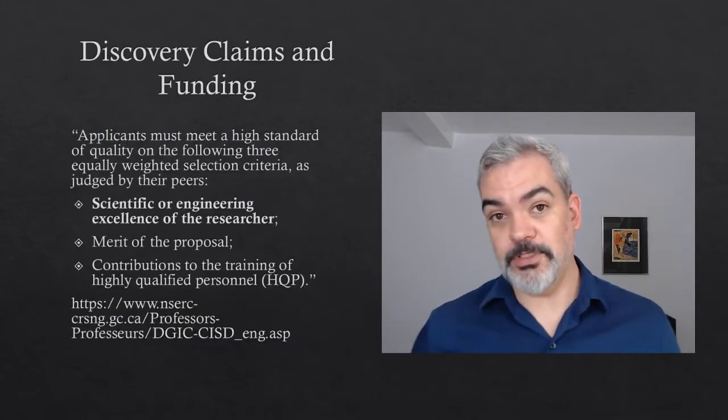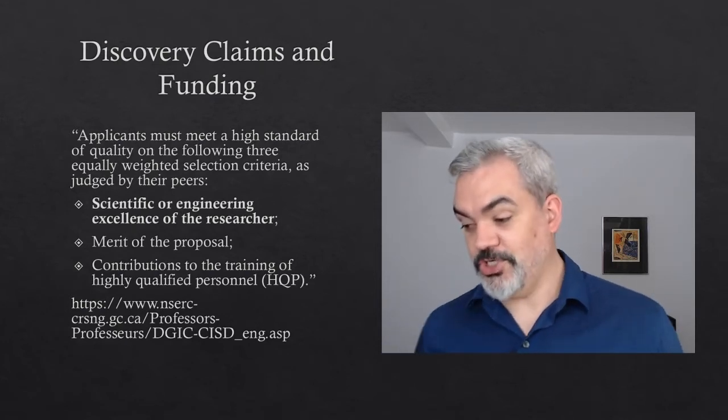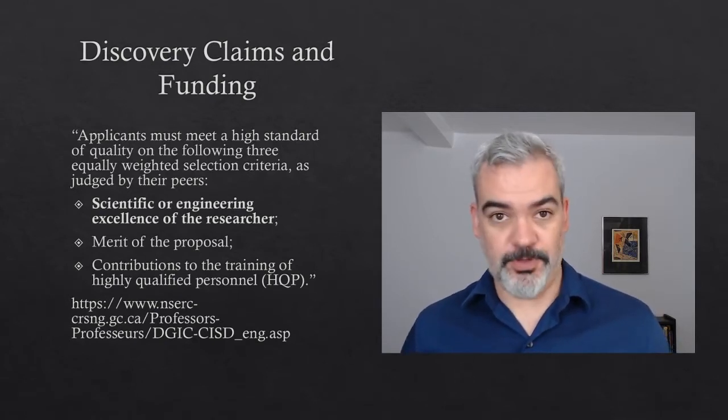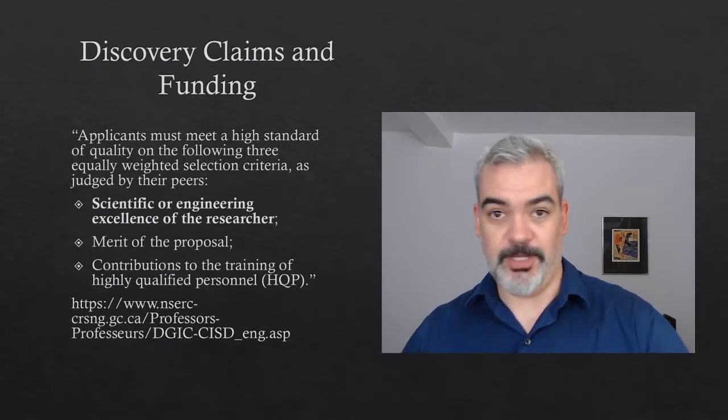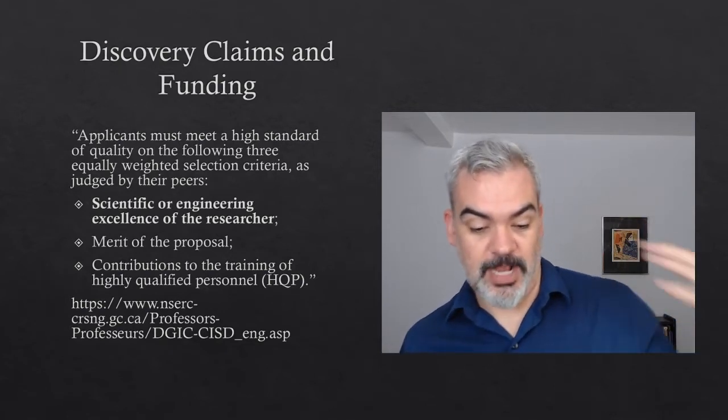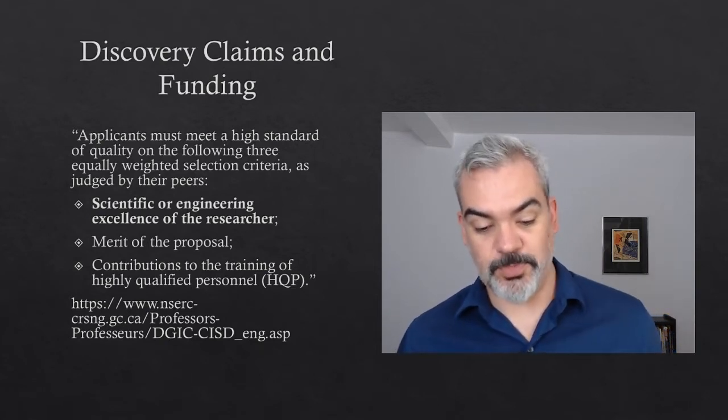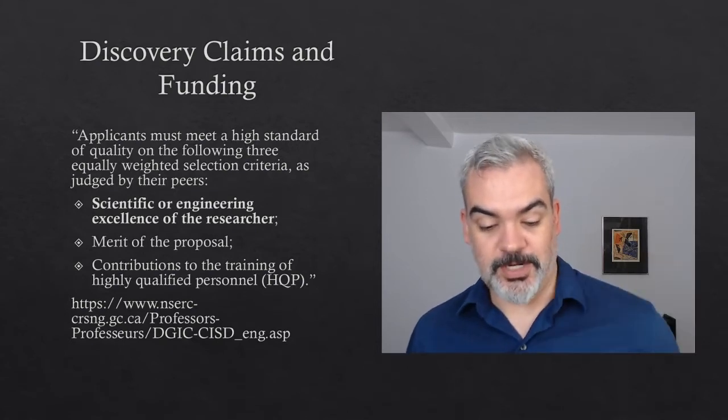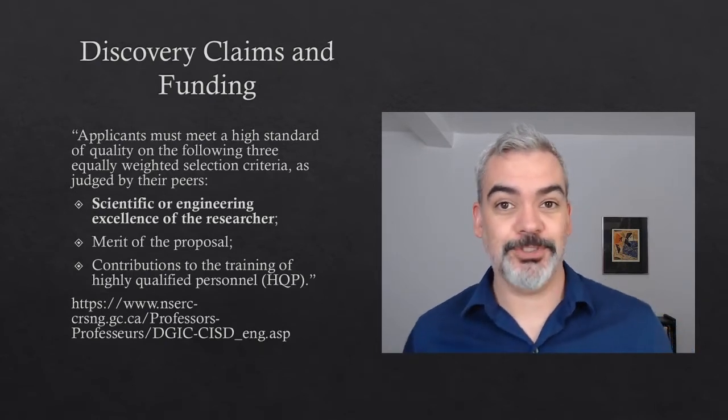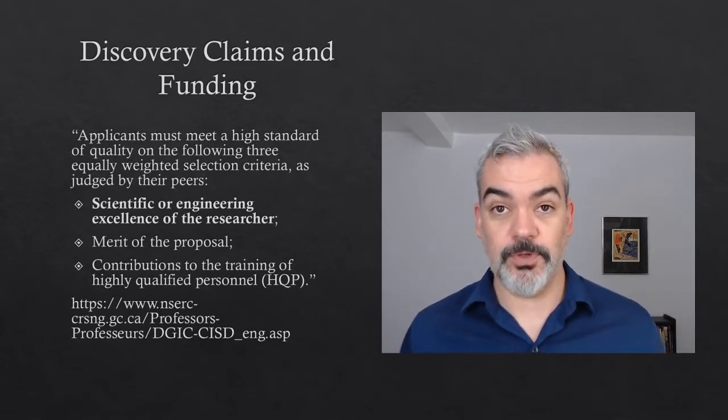And that credit is how you get further funding to keep doing science. So you kind of need a steady stream of credit for discovery claims if you're going to continue to be a scientist, if you're going to have a career in science. Just for example, if you look at the funding criteria that NSERC puts out, so NSERC is the Natural Sciences and Engineering Research Council of Canada. This is one of the biggest funding agencies that does public funding for science in Canada. They put out something like $500 million a year for research. And here are some of their criteria. They say applicants must meet a high standard of quality on the following three equally weighted selection criteria as judged by their peers. And the very first one is scientific or engineering excellence of the researcher.